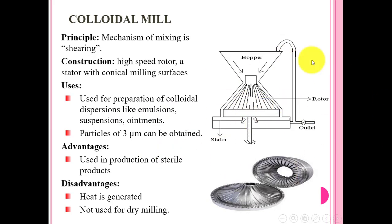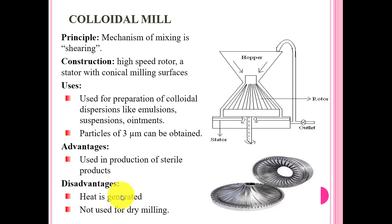The main advantage of the colloidal mill is the production of a sterile product because it is a closed instrument and no contamination can occur. The main disadvantage — common to all instruments used for semi-solid dosage forms — is that high viscosity requires more force for mixing and more resistance. It is not used for dry milling; it is used for liquid and semi-solid dosage forms.